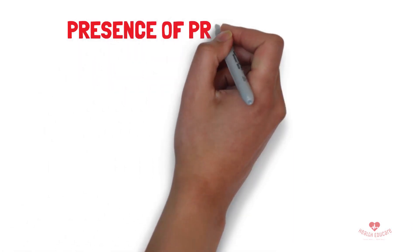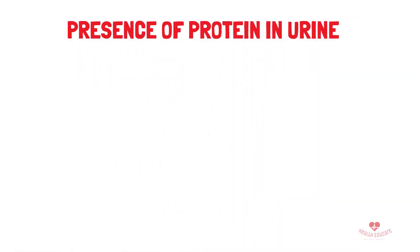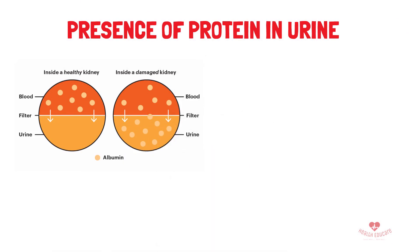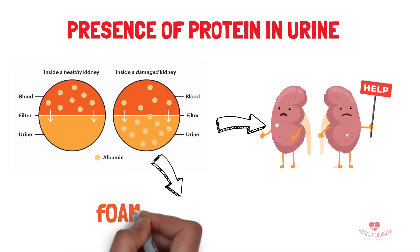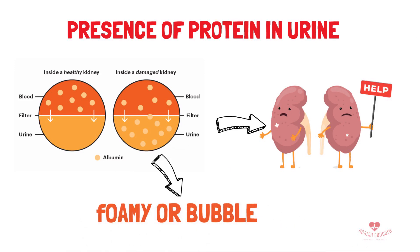Finally, bubbles in the urine may be caused by the presence of protein in the urine. Normally, the kidneys filter out excess protein from the blood and excrete it in the urine. However, if the kidneys are damaged or not functioning properly, protein may leak into the urine and cause it to foam or bubble. This can be a sign of kidney disease or other underlying medical conditions.